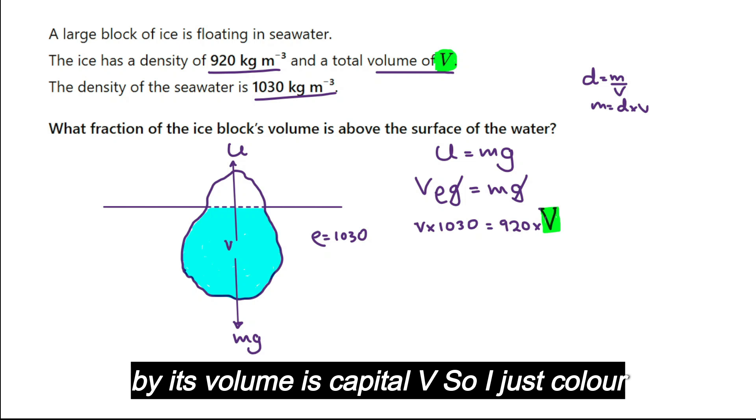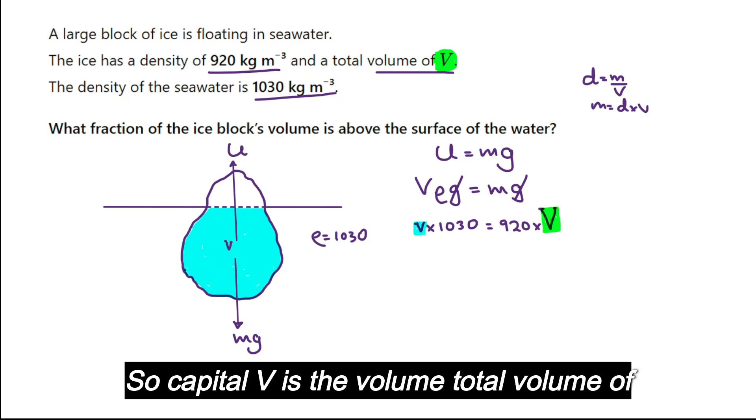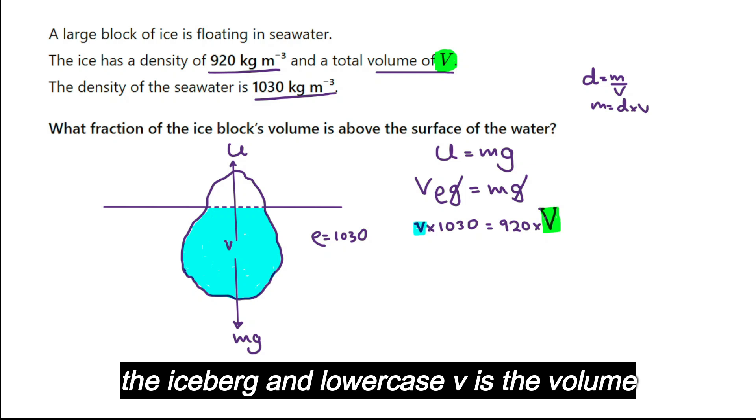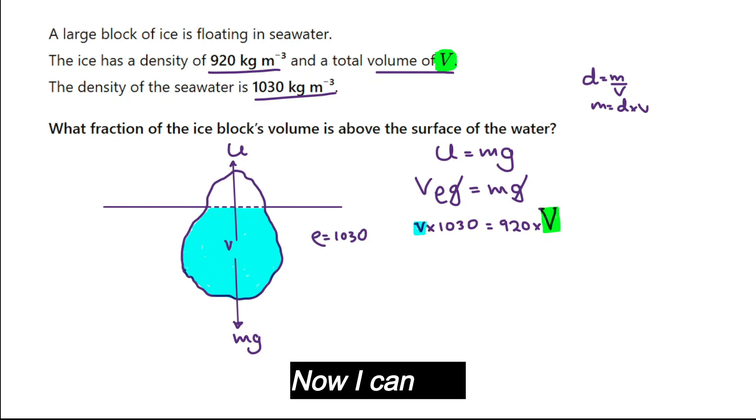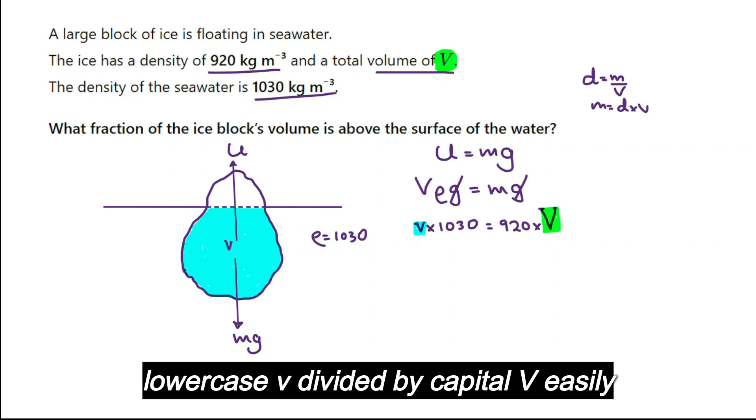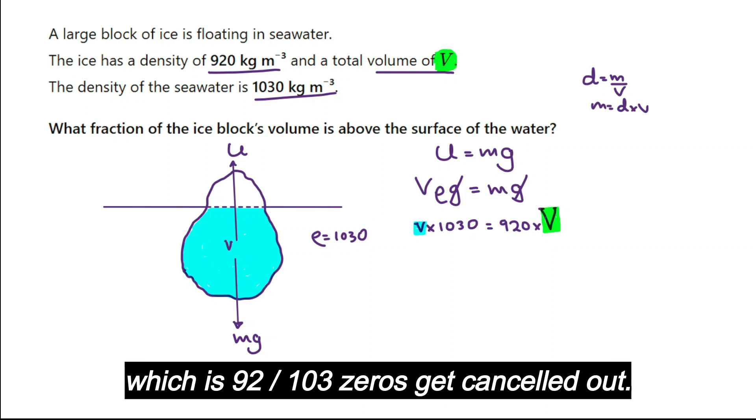So I just color coded this. Capital V is the volume, total volume of the iceberg, and lowercase v is the volume underwater. Now I can find lowercase v divided by capital V, which is 92 over 103. The zeros get cancelled out.